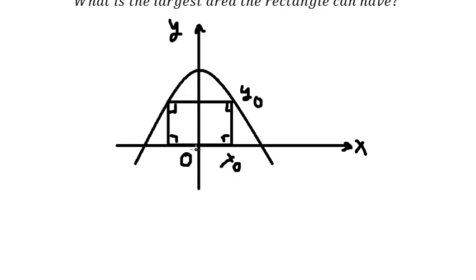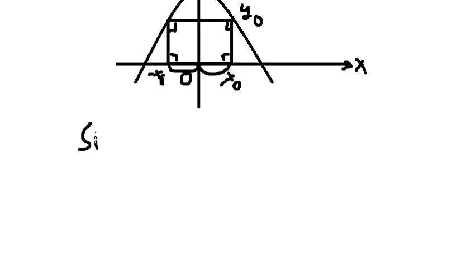So from zero to x₀, we have half of the side of the rectangle. That means on the left we have negative x₀. So side number one, based on the graph, we sum x₀ plus x₀, so you have 2x₀.